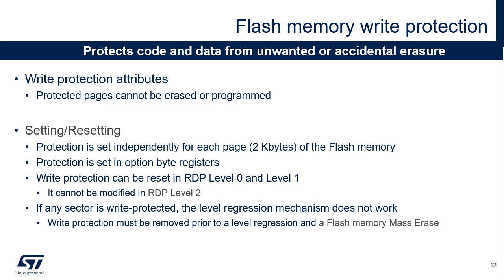The write protection protects code and non-volatile data from unwanted or accidental erasure. This protection is only available on the main flash memory. The write protection can be set on a selection of flash memory sectors only. There are 16 pages of 2 kilobytes in STM32C0 microcontrollers. When a sector is protected, it cannot be erased or programmed. Any attempt to write-access the sector will cause a flash memory error. If at least one sector is write-protected, a mass erase of the flash memory cannot be performed; the protection needs to be removed first.